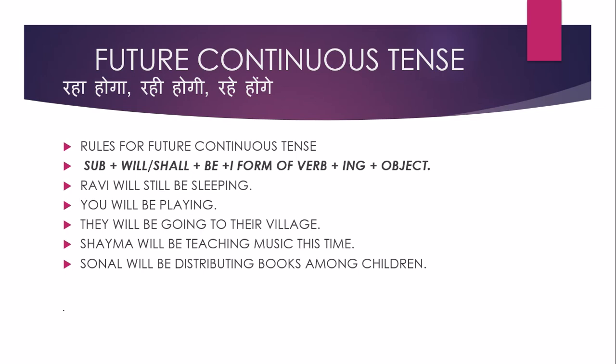Future Continuous Tense — जैसे कि इसके नाम से ही शो हो रहा है कि future continuous tense, जो काम future में continue होगा, वो होता है future continuous tense. जिन वाक्यों के अंत में रहा होगा, रही होगी, रहे होगी, यह आते हैं, यह words तो वो future continuous tense होते हैं।